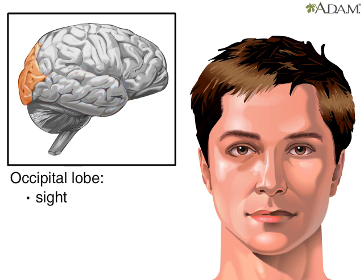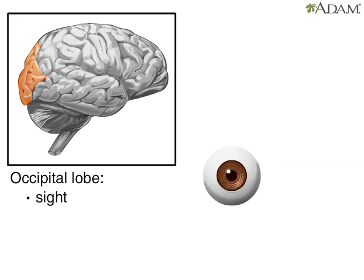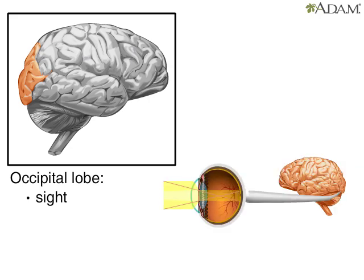The occipital lobe is located at the back of the head, behind the parietal and temporal lobes. The occipital lobe analyzes visual information from the retina, and then processes that information. If the occipital lobe becomes damaged, a person could become blind, even if his or her eyes continue to function normally.